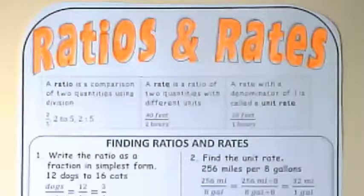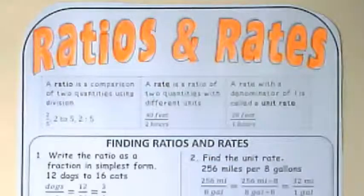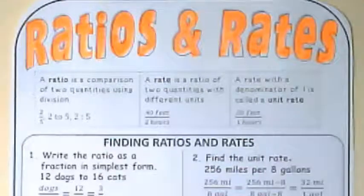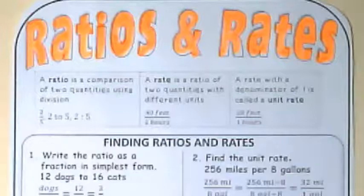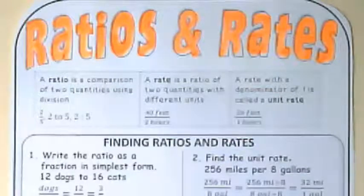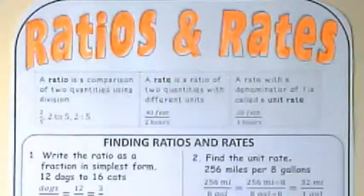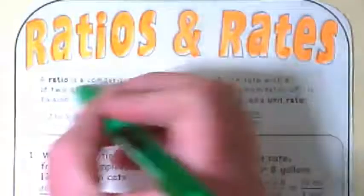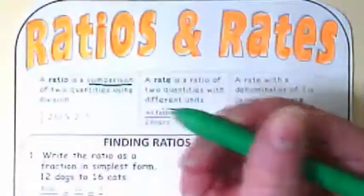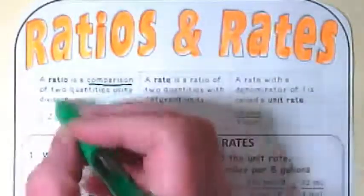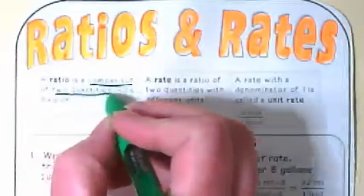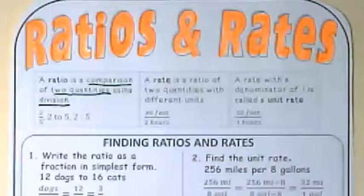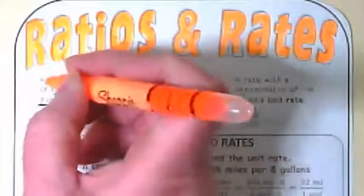All right, so three definitions. First, a ratio is a comparison of two quantities using division. There's some words I want us to underline here: ratio is a comparison of two quantities using division. And let's highlight that word ratio.